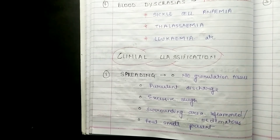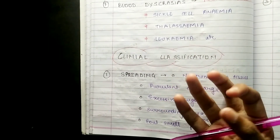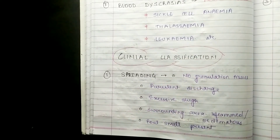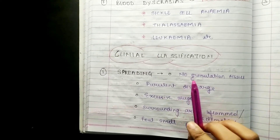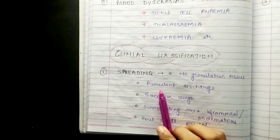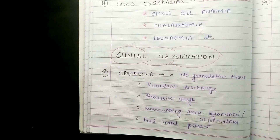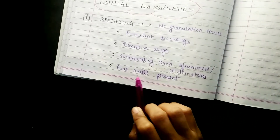Coming to the clinical classification, it is of three types only: spreading, callous, and healing. Spreading and healing you will understand — for example, traumatic is healing type. In spreading, there is no granulation tissue, there is purulent discharge, excessive slough, the surrounding area is inflamed or edematous, and foul smell is present.